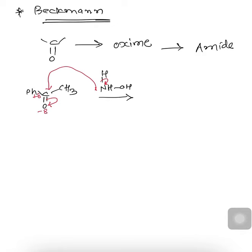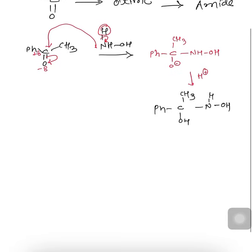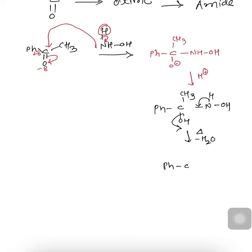In the first step, Ph-C(=O)-CH3 reacts with NH2OH to form Ph-C(NHOH)-CH3. In the next step, H+ (coming from NH2OH) is involved. The final structure is Ph-C(OH)(NH-OH)-CH3. When we increase the temperature, there is elimination of a water molecule to form the ketoxime: Ph-C(=N-OH)-CH3.